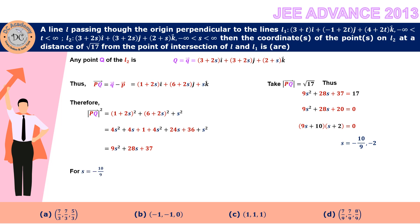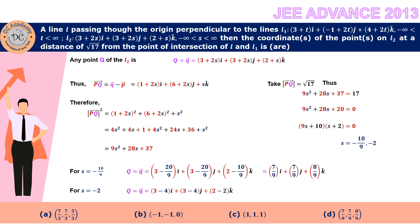For s = −10/9, the position vector of Q is (7/9)i + (7/9)j + (8/9)k, corresponding to coordinates (7/9, 7/9, 8/9) — so option D is correct. For s = −2, the position vector of Q is −i − j + 0k, giving coordinates (−1, −1, 0) — so option B is correct. This JEE Advanced problem is solved using vector algebra, and it can also be treated as a three-dimensional geometry problem. Hope you understood — thank you.